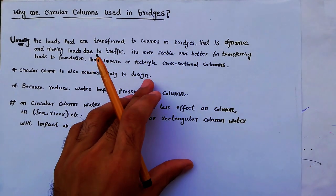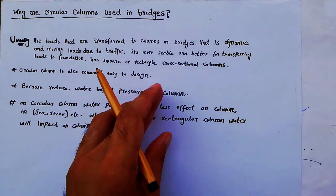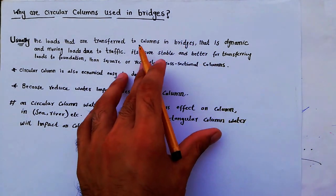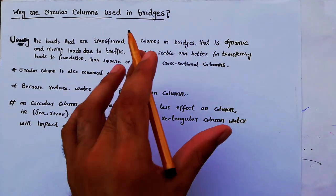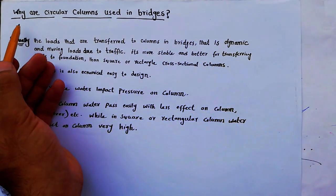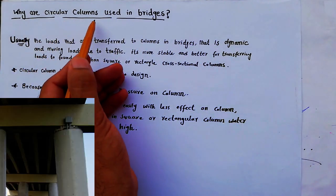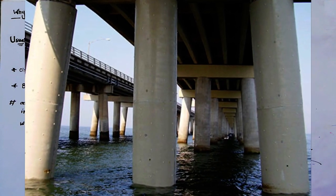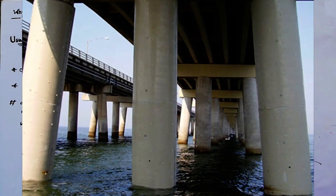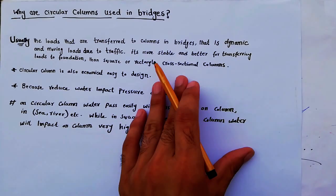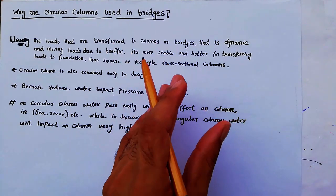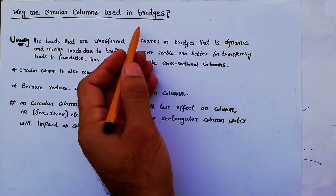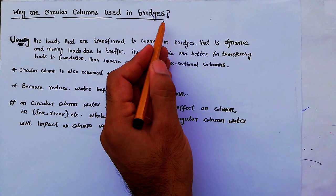Assalamu alaikum friends, welcome back to Several Engineers' YouTube channel. Today in this lecture we are going to discuss why circular columns are used in bridges construction. It is a very important topic and many students are asking why we don't provide square or rectangular columns in bridge construction.